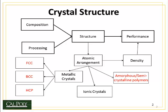Let's take a look at the big picture. Our big picture consists of four bold boxes: composition and processing, which together affect the structure of the material, and that structure determines the performance of the material. We're going to be looking specifically at structure in Topic 3 — how atoms arrange themselves in three-dimensional space. There are three choices: they can form metallic crystals, which are the simplest form; ionic crystals, which are more complicated; and amorphous and semi-crystalline polymers.